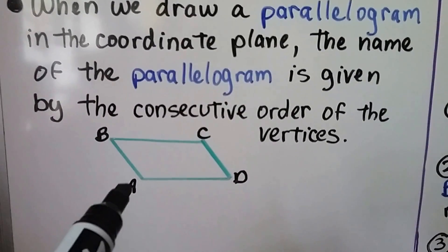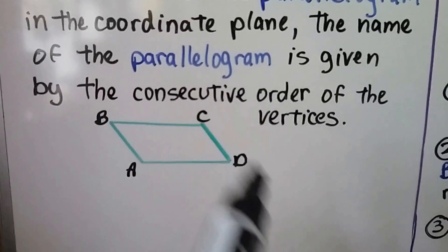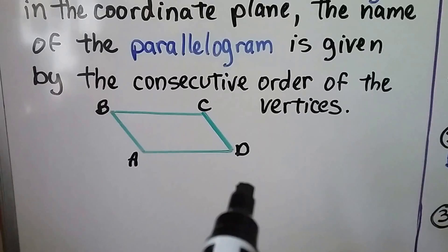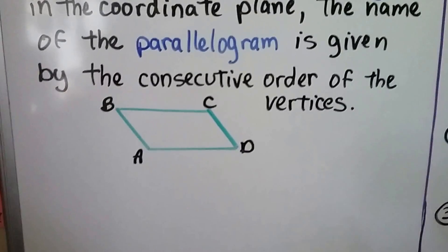It doesn't matter where we start. This could be clockwise ABCD, or we could say BCDA or CDBA, as long as we consecutively go in that direction. We can also go counterclockwise and say it's DCBA or CBAD.